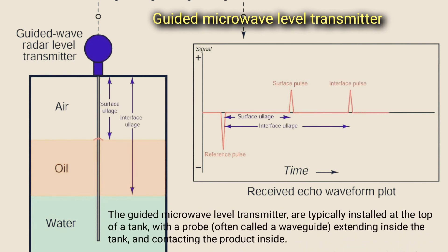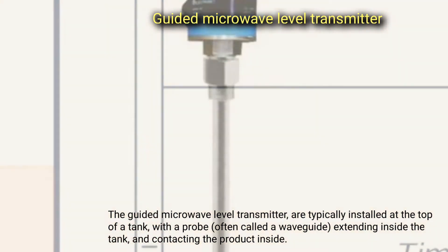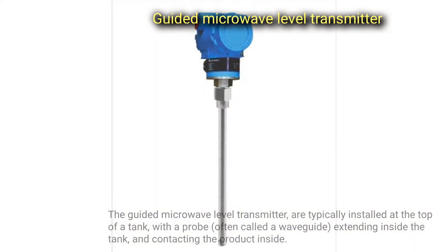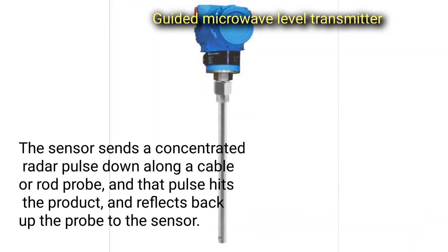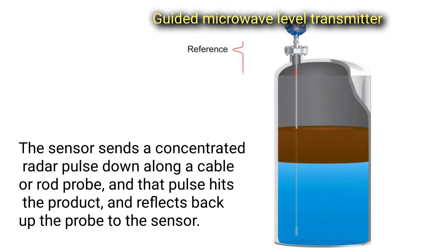The guided microwave level transmitters are typically installed at the top of a tank with a probe, often called a waveguide, extending inside the tank and contacting the product inside.